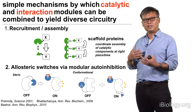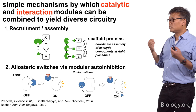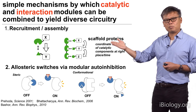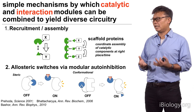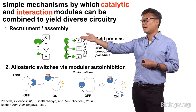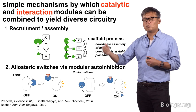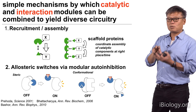So these interaction domains are combined with the catalytic domains to control where these catalytic domains go and who they interact with. How is it that catalytic and interaction domains can be put together to yield the diverse circuitry that we see? One mechanism is really based on the simple principle of recruitment assembly — the cell is full of different types of catalytic modules, and a key question is how do they efficiently interact with the right ones. So if protein X is a kinase and Y is its substrate, they might have a modular interaction domain and recognition ligand fused to these partners, which allows protein X to specifically interact with and modify protein Y.